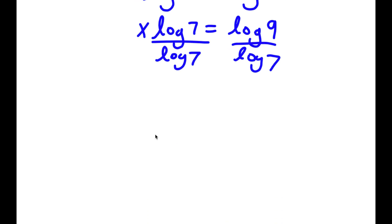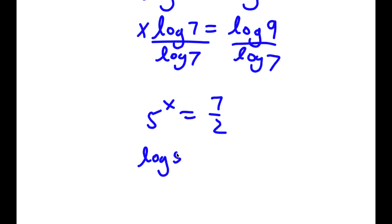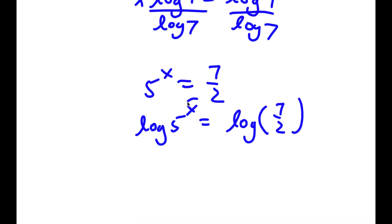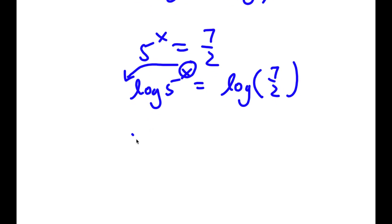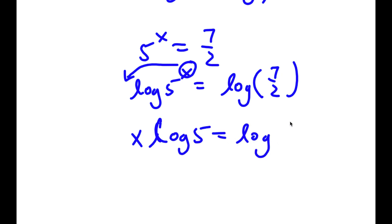So that's why I'm using this property on 5 to the power of x is equal to 7 over 2. I'll first take the log on both sides: log 5 to the power of x is equal to log 7 over 2. Then I can move my exponent to the front, so now I have x times log 5 is equal to log 7 over 2.